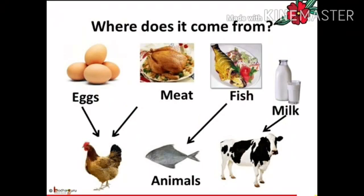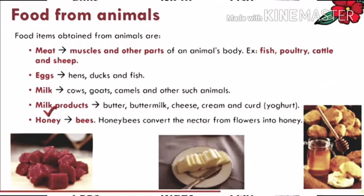Where do eggs, meat, milk, etc. come from? The answer is these come from animals. These food items we get from animals - hens, ducks, fishes, etc. are used to take the eggs from them.